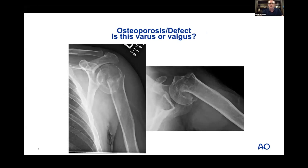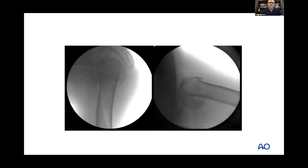Here's an osteoporotic fracture — looking at the AP, it's difficult to know the exact orientation, but looking at the lateral there might be just a sliver of head. In the operating room it looks like a crushed head that's been impacted onto the shaft. I know when I get it back out to length there will be a big defect. Working on getting it back to length, restoring the medial aspect of the head and the calcar back on the shaft.